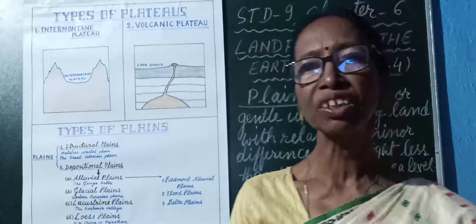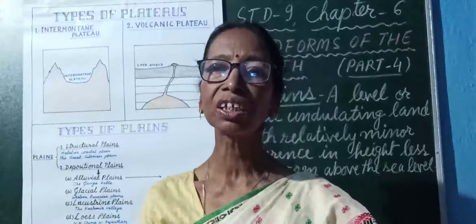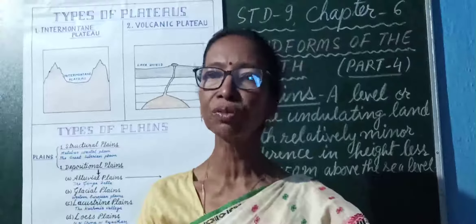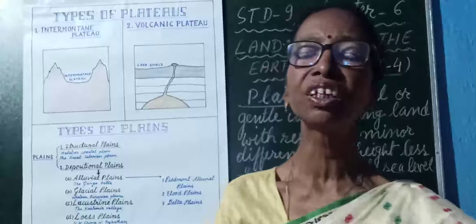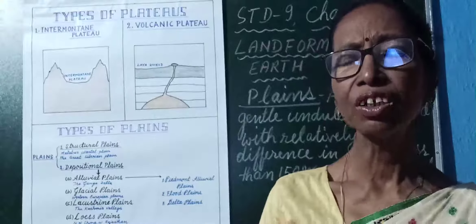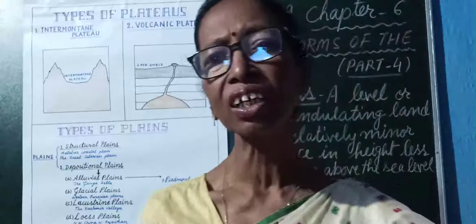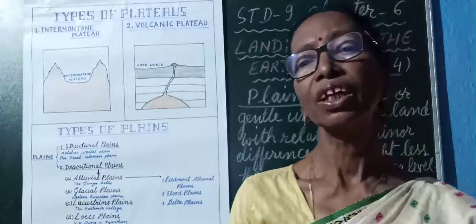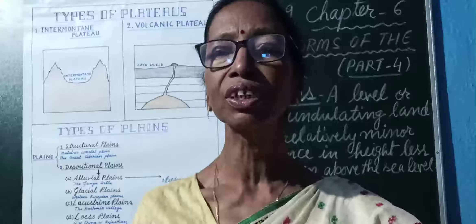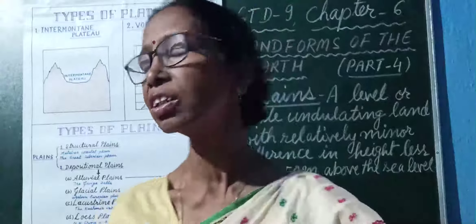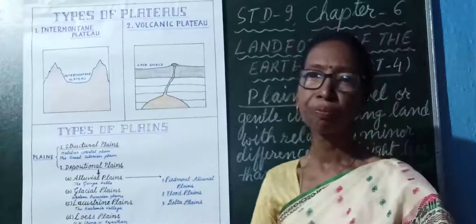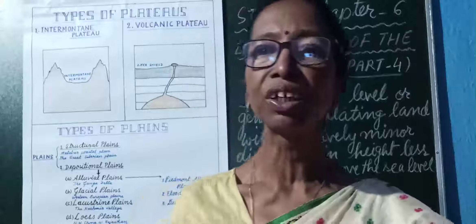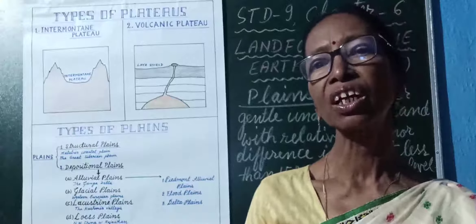First is the Piedmont Alluvial Plain. These are plains formed at the foot of a mountain. When a river flows over a steep slope, it flows at great speed. All of a sudden, when it reaches the plain area, it is not able to flow fast. So whatever sediments it carries are deposited at the foot of the mountain, forming what is known as a Piedmont Alluvial Plain.